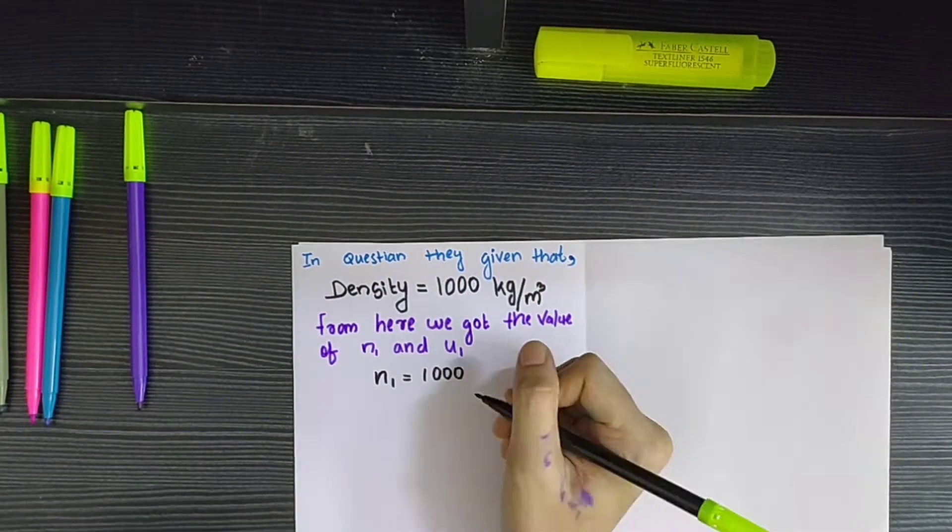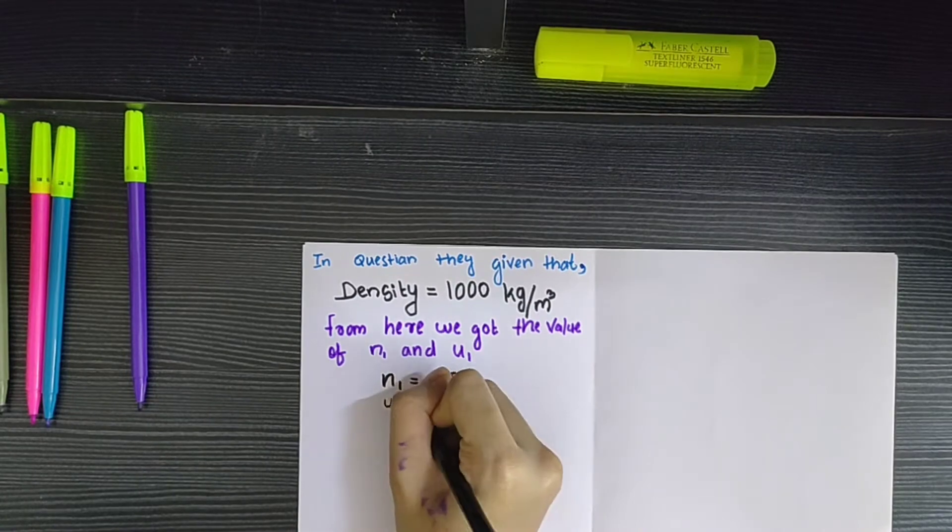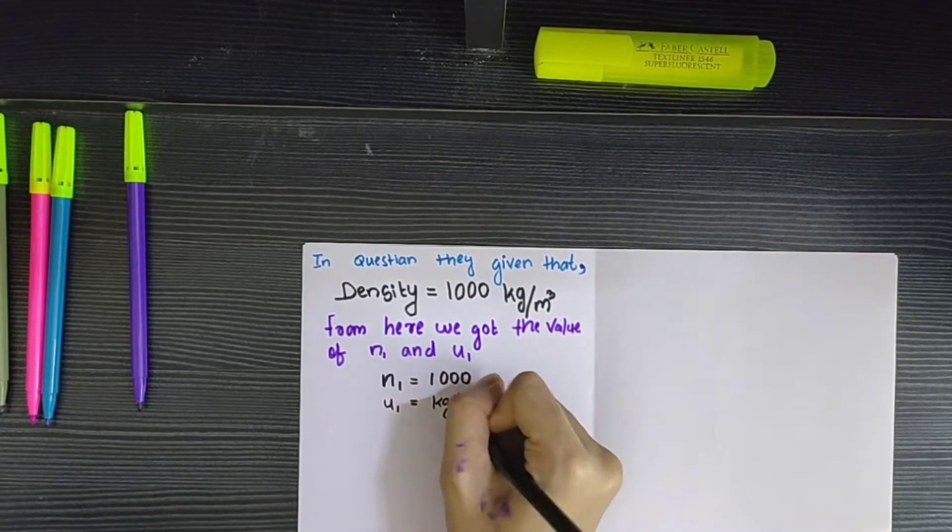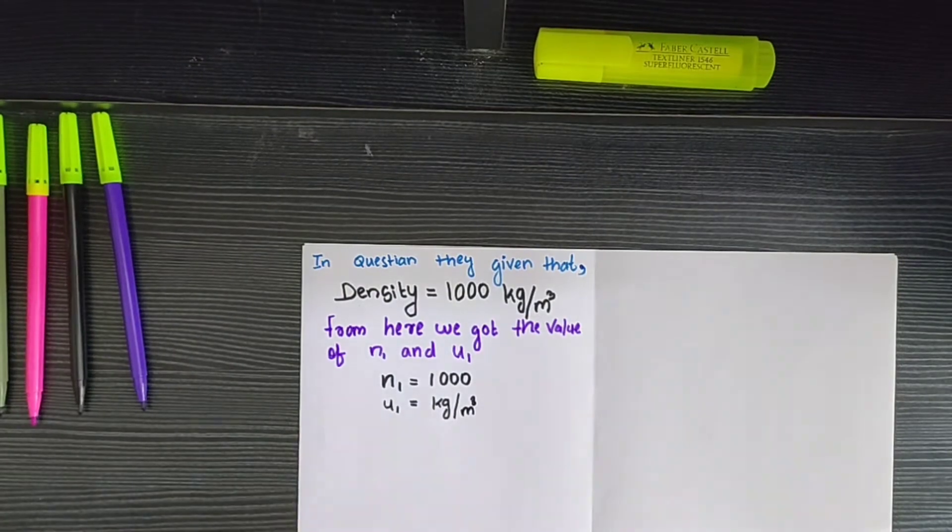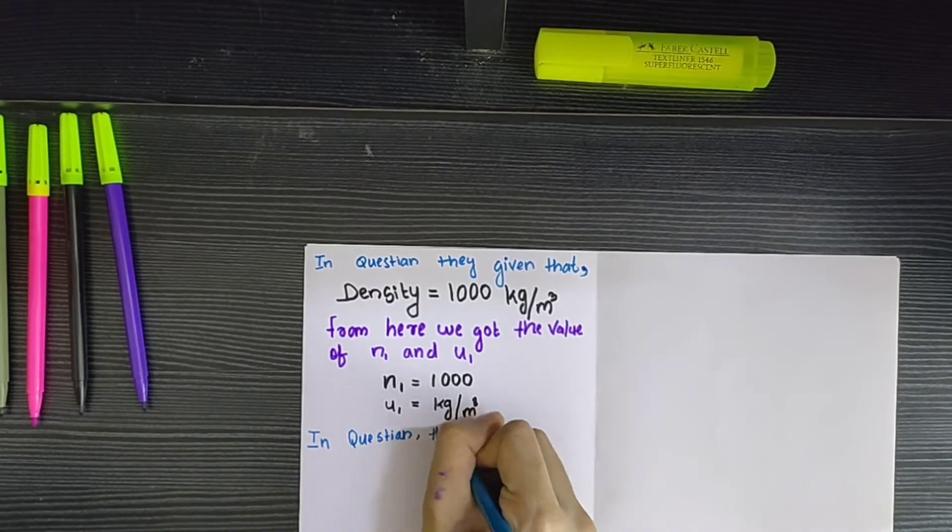So the value of n1 is equal to 1000, that is the numerical part, and the value of u1 is equal to kg/m³, that is the unit. In the question they also given that